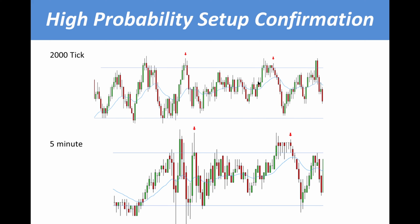As price keeps going sideways in this trading range, I have another failed breakout but the signal bar is not perfect, so I want to wait for a better one. I have a lower high setup that has a better chance of succeeding. I take a look at the five minute chart and I have an almost identical lower high setup, waiting for price to pull back into the trading range because most breakouts of trading ranges will fail.